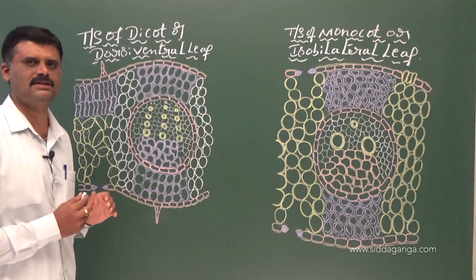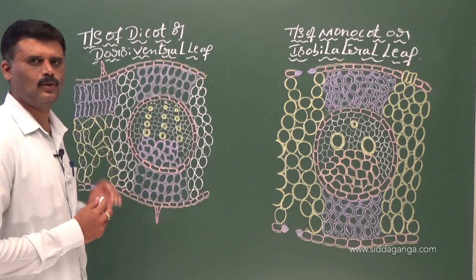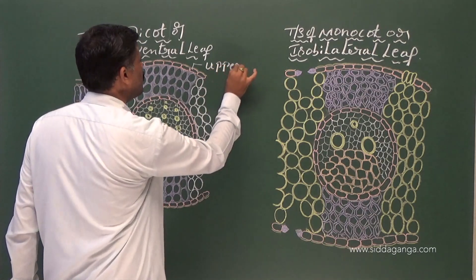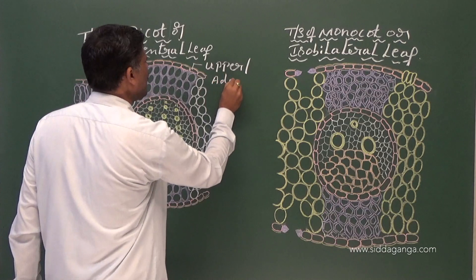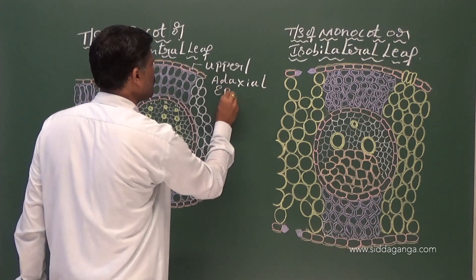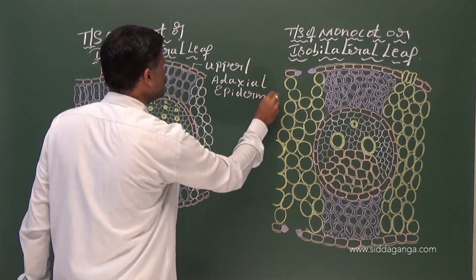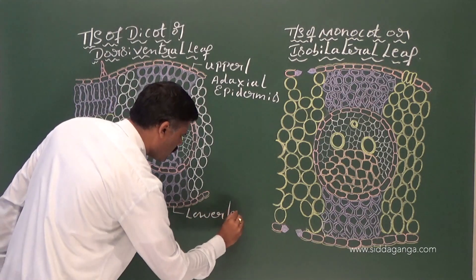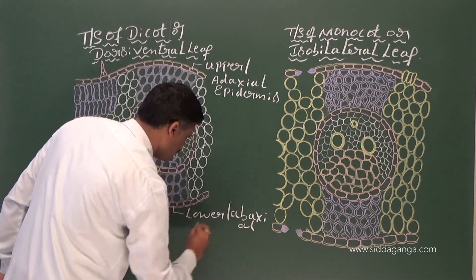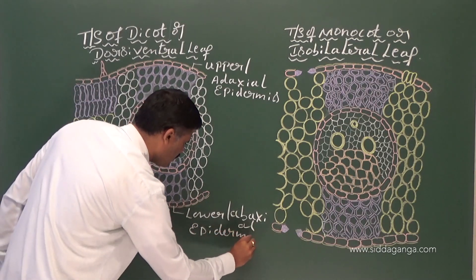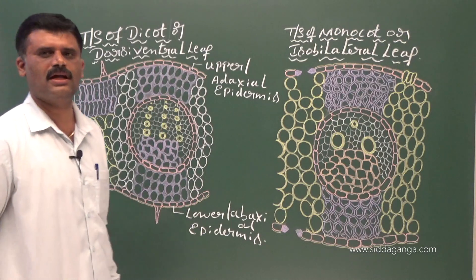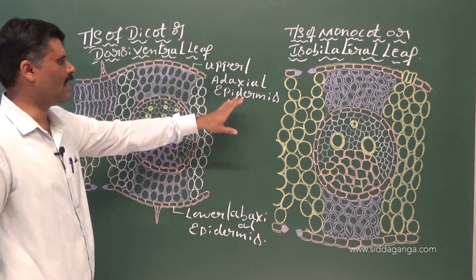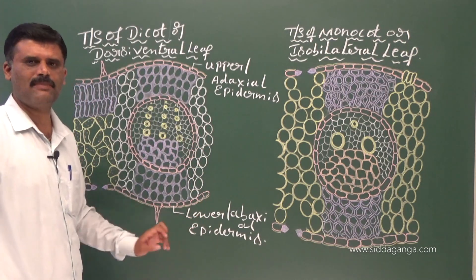The epidermis in the leaf is divided into two types: upper epidermis and lower epidermis, also called adaxial epidermis and abaxial epidermis. In both dicot and monocot leaf, the epidermis is divided into upper or adaxial epidermis and lower or abaxial epidermis.